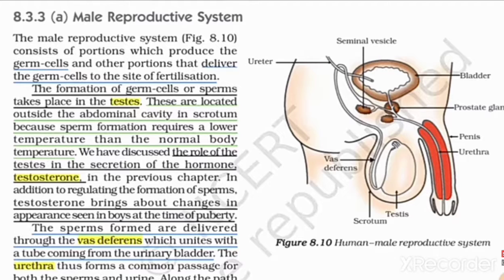We have also discussed the role of the testes in the secretion of the hormone testosterone. There are two main important points for the testes: one is it is helpful for the formation of sperms, and it also produces one hormone — testosterone.